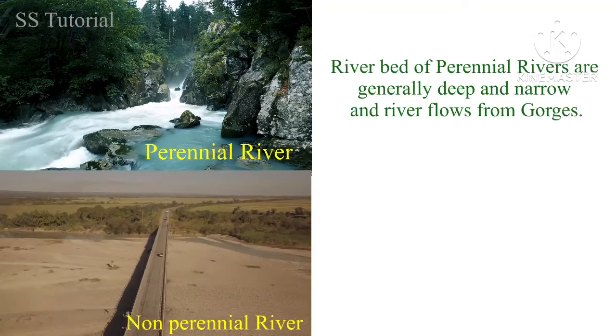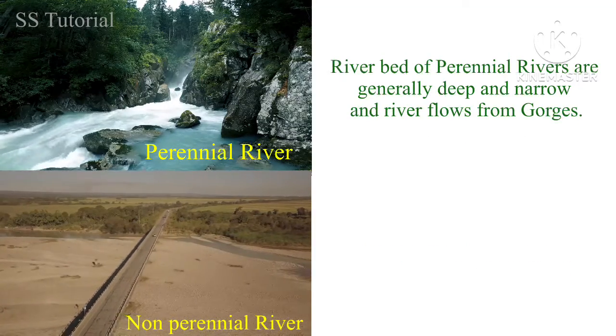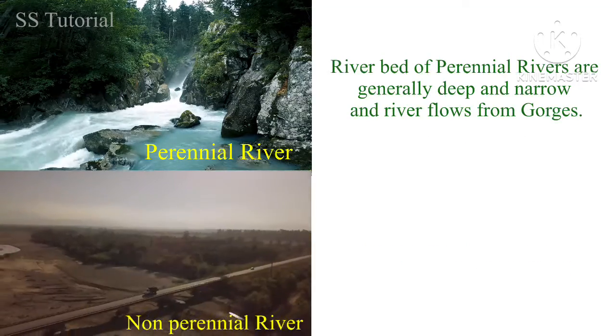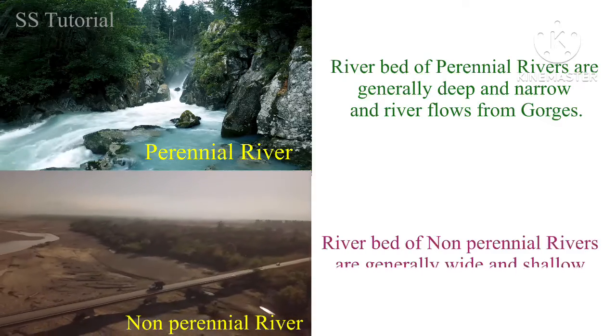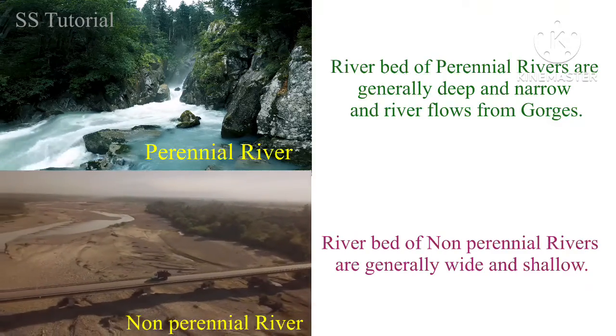The riverbed of perennial rivers is narrow and deep, and the river flows through gorges. Whereas the riverbed of non-perennial rivers is wide and shallow.